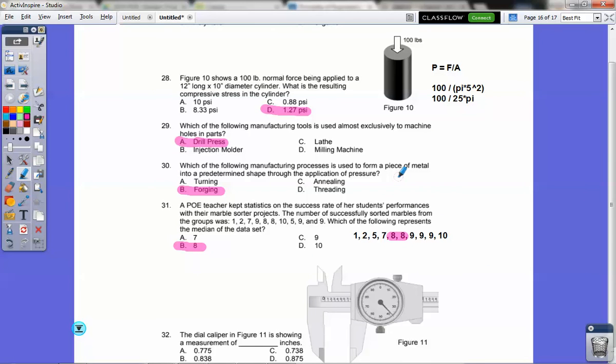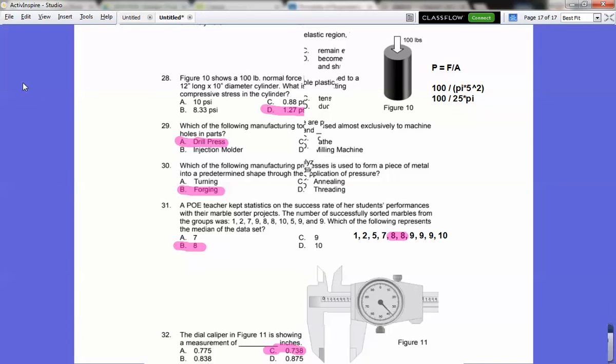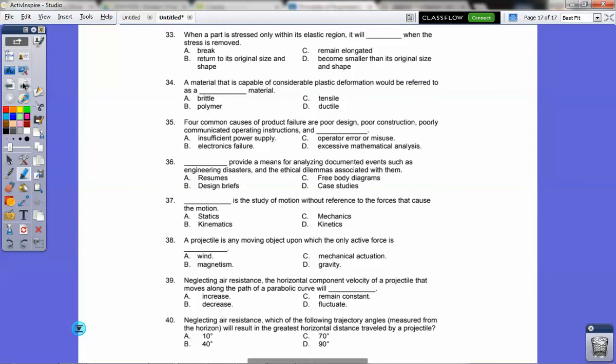I forgot the dial caliper question. This should be a gimme. Hopefully you've read enough dial calipers in your life. Dial caliper and figure 11 is showing a measurement of how many inches? Well, it's 0.7 because it's past the 7 here, not quite to the 8. And then this dial is reading at the 38 on the dial here. So that's C, 0.738.